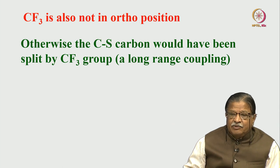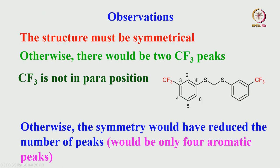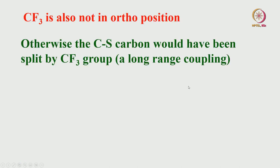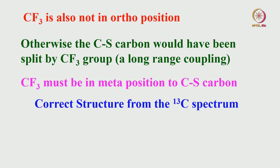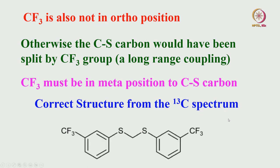So CF₃ is not para, not ortho to the CS carbon. The only remaining option is that CF₃ must be meta to the CS carbon. The correct structure, drawn from interpretation of the carbon-13 spectrum, is the meta-substituted isomer. Simply by looking at the number of carbons and the multiplicity pattern of each carbon coupled to fluorine, we can draw the conclusion that this is the correct structure of the molecule.